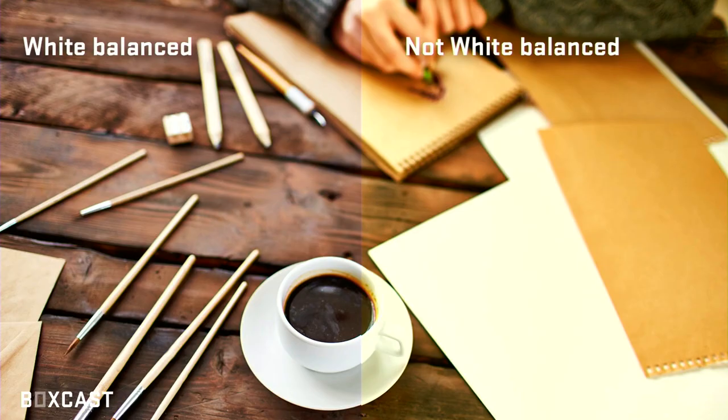The first one we'll talk about is white balance. The simplest way to explain it is the picture on the left is white balanced and the picture on the right is not white balanced. All white balance is really determining is the color temperature in your image — whether something is too cool or too warm. Usually your auto settings on your camera will determine this pretty well for you, but depending on the type of lighting and the bulbs in the room, this can get a little wonky.